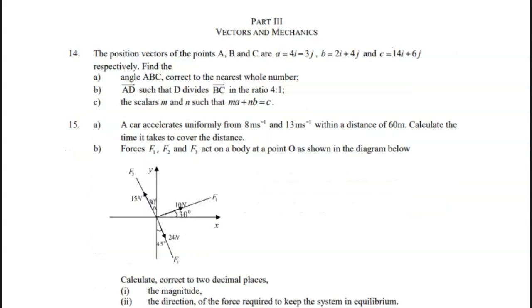So it's left with the last set of questions. Question 14, vectors and mechanics. The position vectors of the points A, B, and C are a equals 4i minus 3j, b equals 2i plus 4j, and c equals 14i plus 6j respectively. Find Part A: Angle ABC, correct to the nearest whole number.